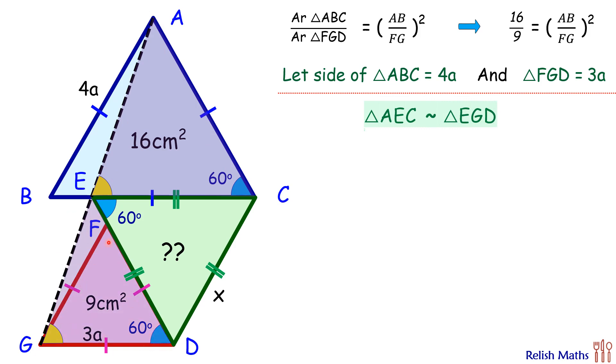Now as the triangles are similar, the ratio of the sides will be equal. So here we are taking the ratio of AC upon EC, that will be equal to ED upon GD.